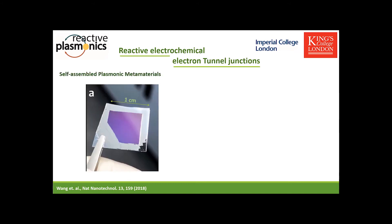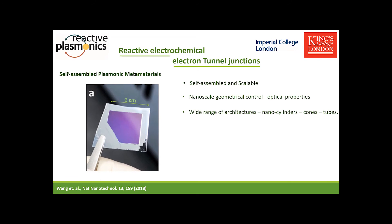The second example is reactive electrochemical electron tunnel junctions — a really unique device based on self-assembled plasmonic metamaterials comprised of gold nanocylinders. These materials are self-assembled and scalable, yet allow nanoscale geometrical control of the optical properties. They can be produced in a wide range of architectures — not only nanocylinders, but also nanocones and nanotubes — allowing control of carrier extraction and field enhancement.